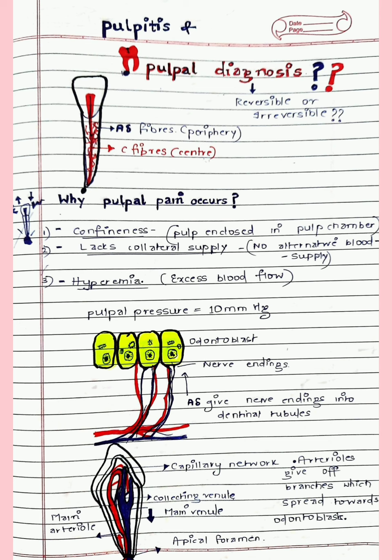Why is pulpal pain so severe? The number one reason is confinedness — the pulp is confined in the pulp chamber inside the tooth and hence there is nothing to exert pressure on. This is why in pulp polyp cases the patient doesn't experience pain, because the pulp has expanded out of the chamber. The second reason is it lacks collateral blood supply — there is only one artery entering and one venule exiting from the apical foramen, with no alternative blood supply. The third reason is hyperemia — there is excessive blood flow inside the pulp.